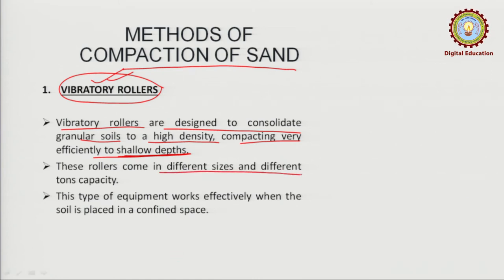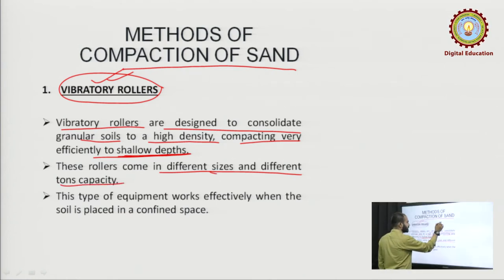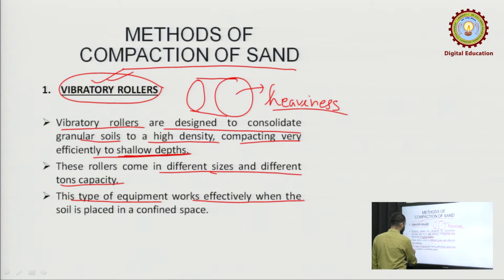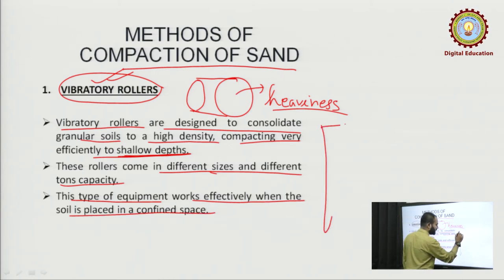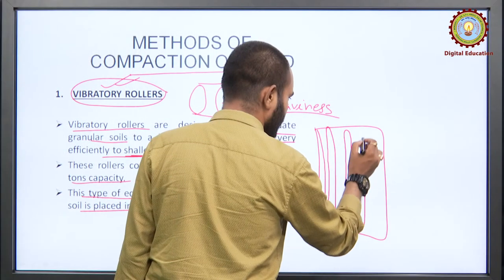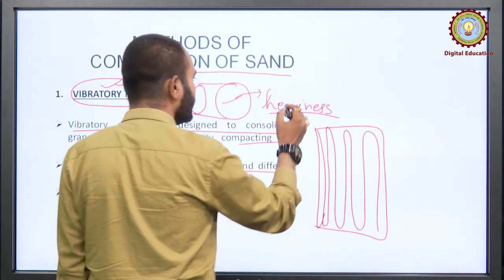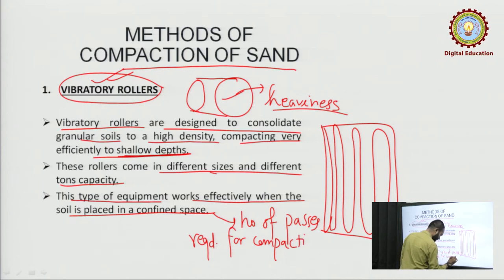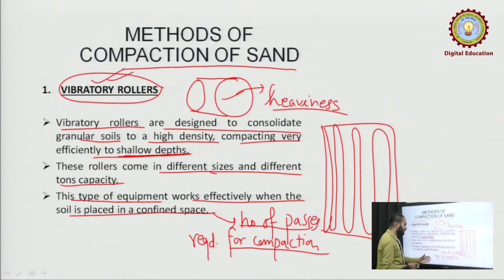These rollers come in different shapes and sizes, with different load capacity — the cylindrical part may be of different heaviness. For rollers, we talk about the number of passes required for compaction. It depends upon what type of soil it is, and accordingly the number of passes are decided. For a confined area, if a vibratory roller is used, it moves pass by pass to compact the soil.